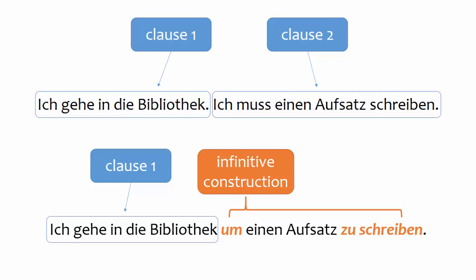Just like in English, you will notice that the infinitive construction in German replaces part of the original second clause. In other words, the subject ICH and the verb MUSS both disappear. If you think about it, this disappearance makes sense. You wouldn't say you're going to the library in order to you have to write a paper — you'd just say you're going to the library in order to write a paper.